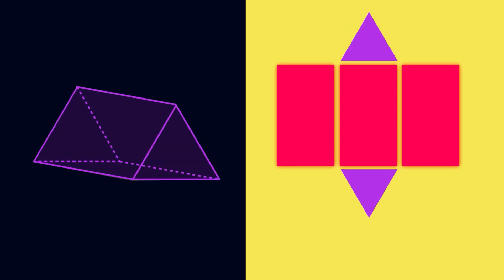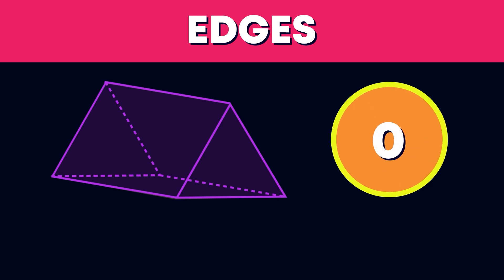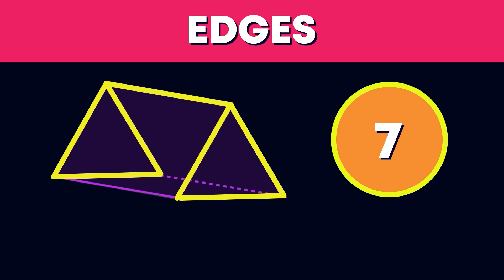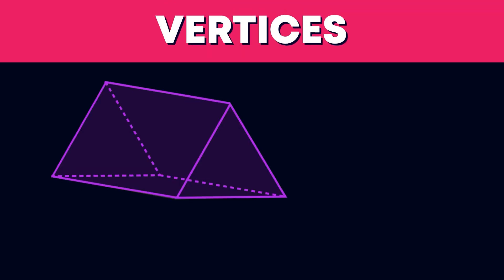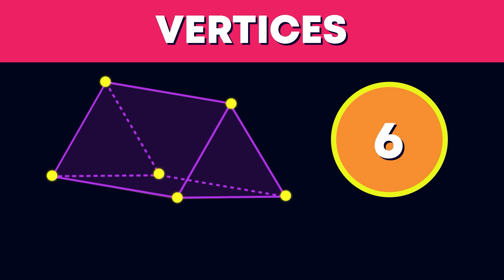What shapes are these faces? It has two triangle faces that are facing each other; the other faces are rectangles — good spotting! Now let's count the edges together. We will mark them as we count: 1, 2, 3, 4, 5, 6, 7, 8, 9 edges. Can you see how many vertices a triangular prism has? 1, 2, 3, 4, 5, 6 — that's correct!